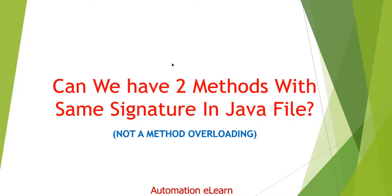Hey, hi everyone, welcome back to Automation Elon. In today's video we are going to discuss one scenario in Java: can we have two methods with the same signature in a Java file?